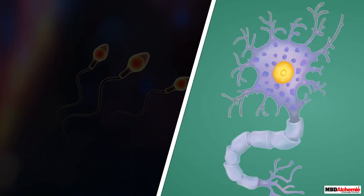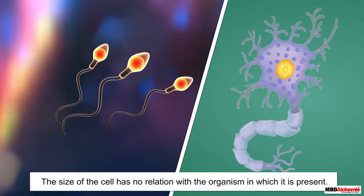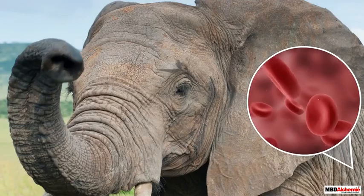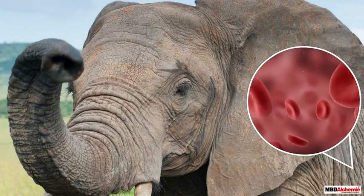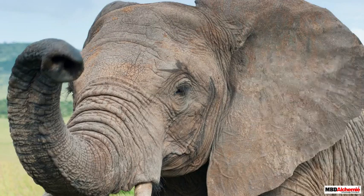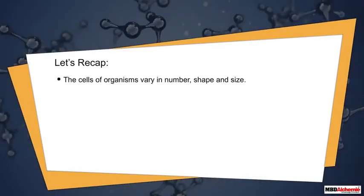The size of the cell has no relation with the organism in which it is present. For example, a large organism such as an elephant also has very small cells.